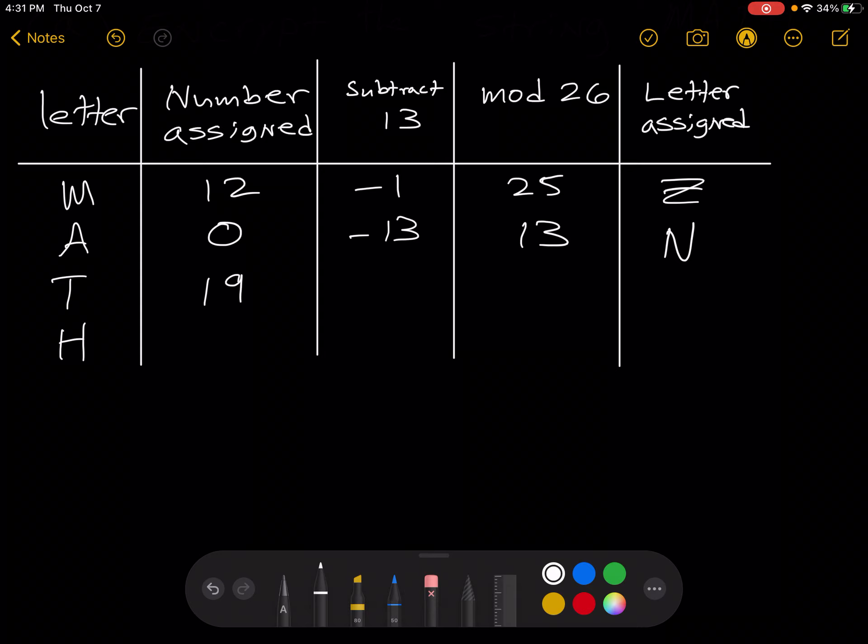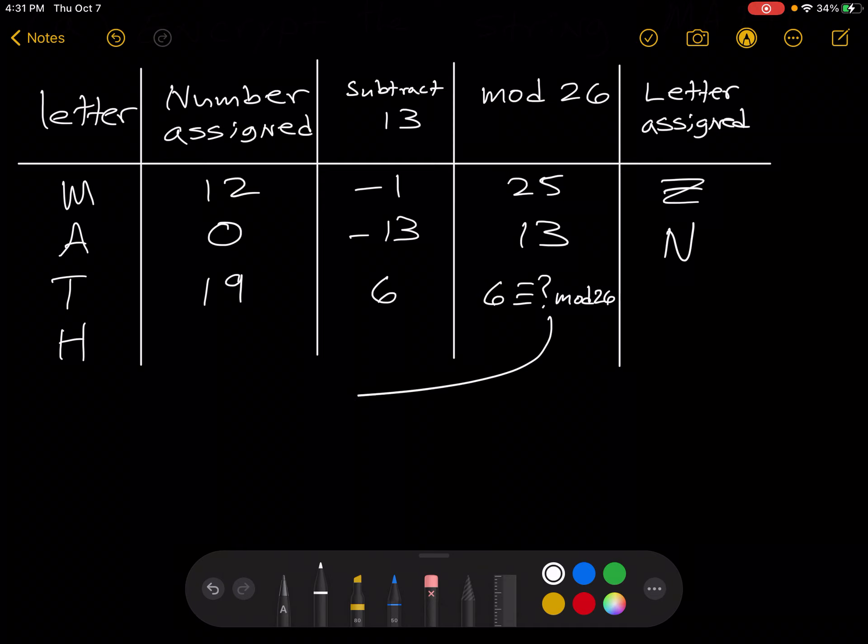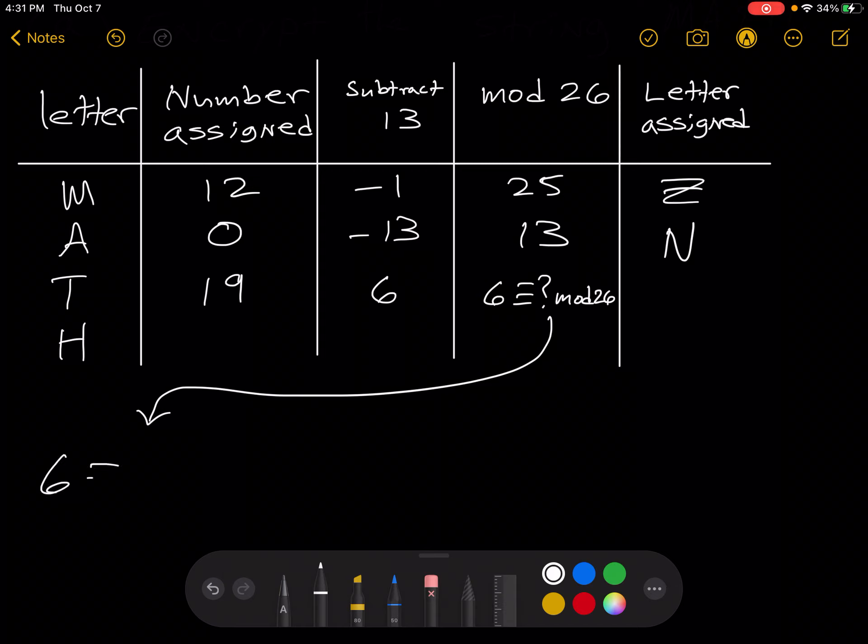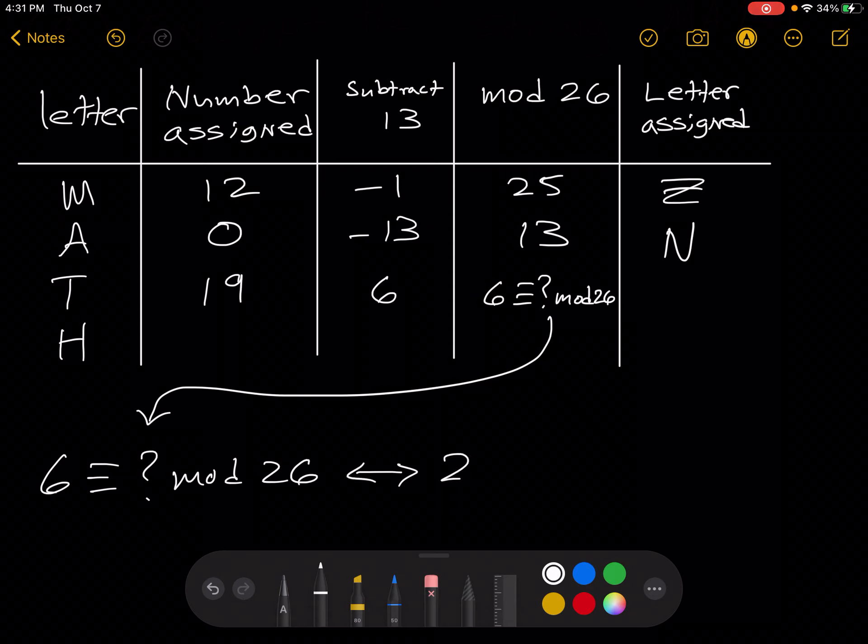19 minus 13 is 6. And so right here, we want a number congruent to 6 mod 26. So remembering that we want a number between 0 and 25 inclusive, the only thing that will work is 6. This is because 6 minus 6 is 0, and 0 over 26 is 0, which is an integer.